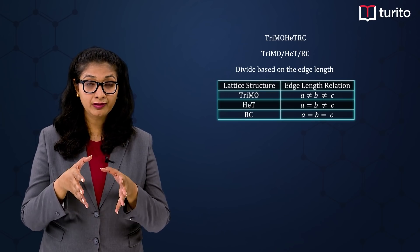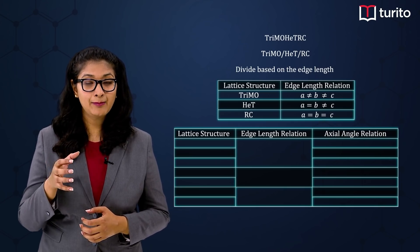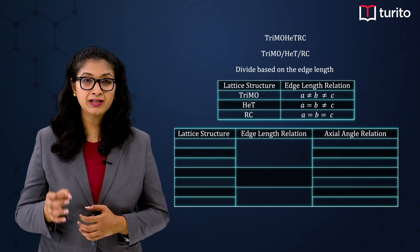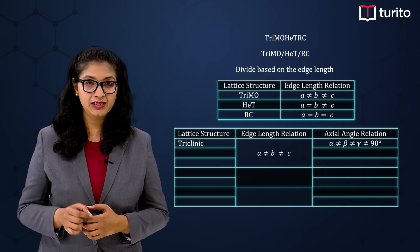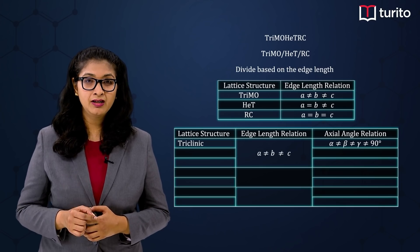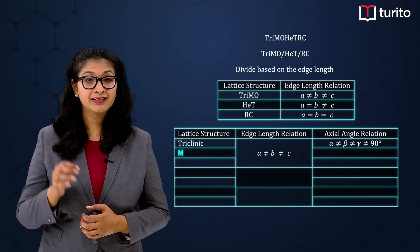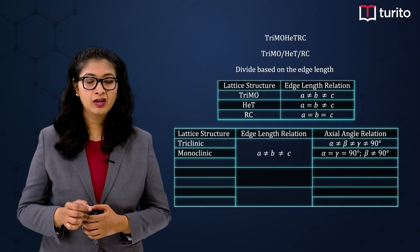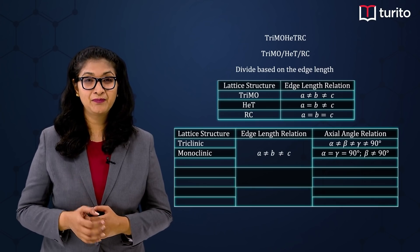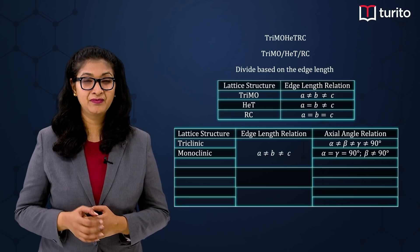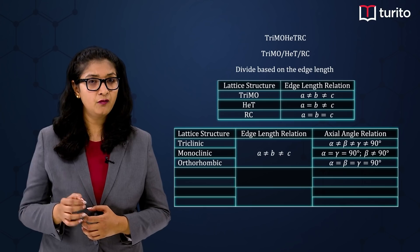Now, what is the difference between those parts? The angles. So let us look at the angles. The first letter T stands for Triclinic, where alpha is not equal to beta, not equal to gamma, and none are equal to 90°. Next, M stands for Monoclinic, where alpha is equal to gamma, both equal to 90°, but beta is not equal to 90°.